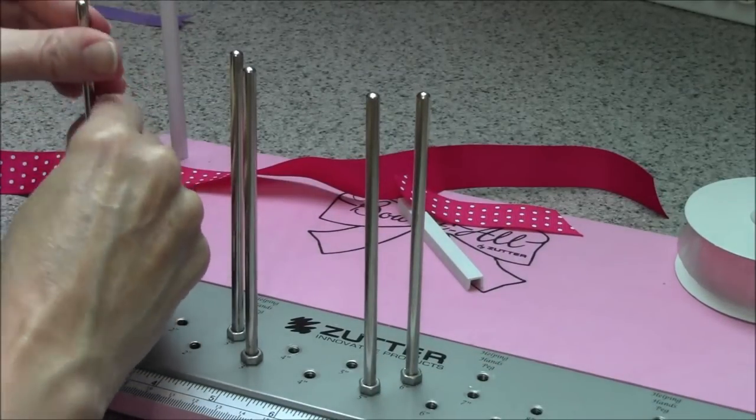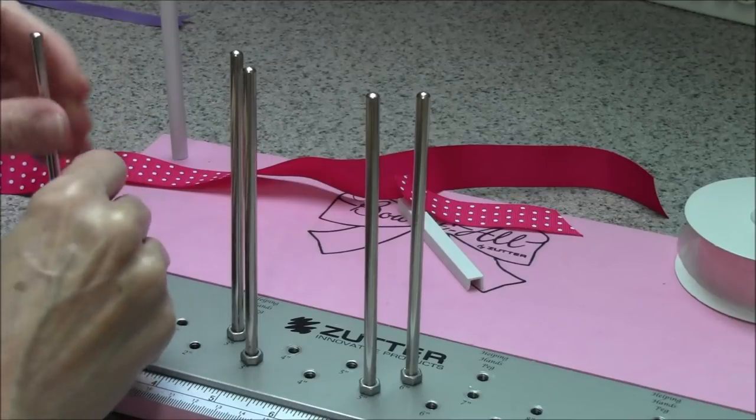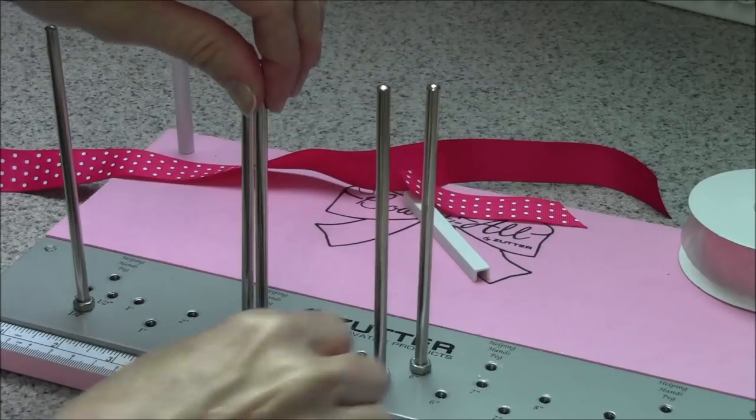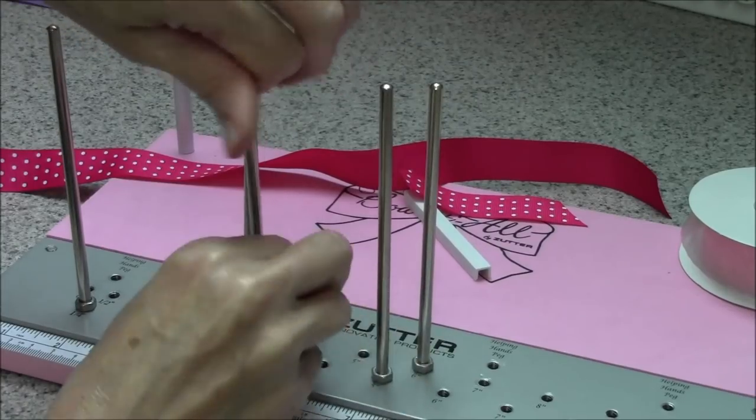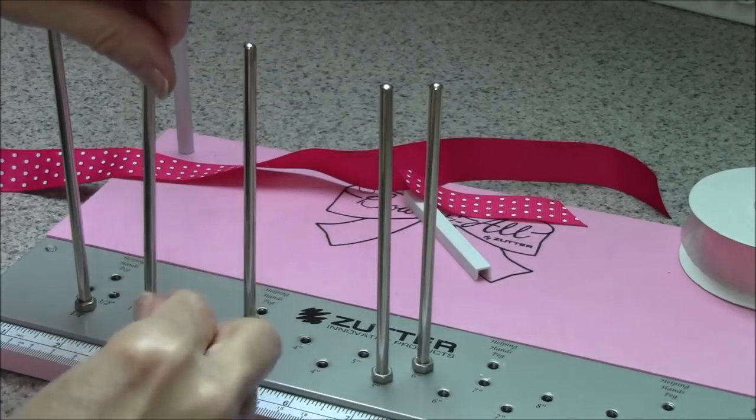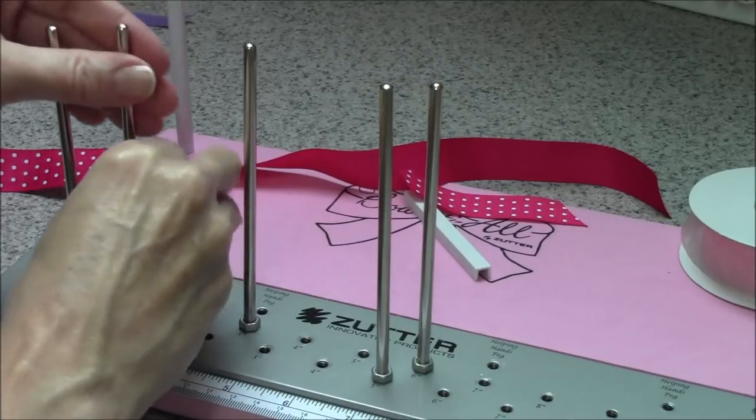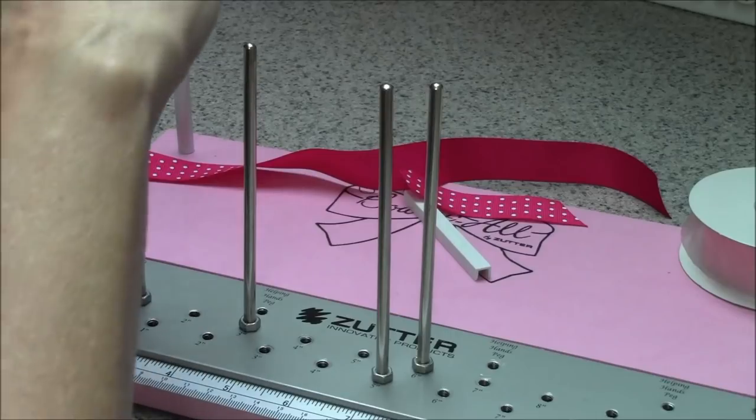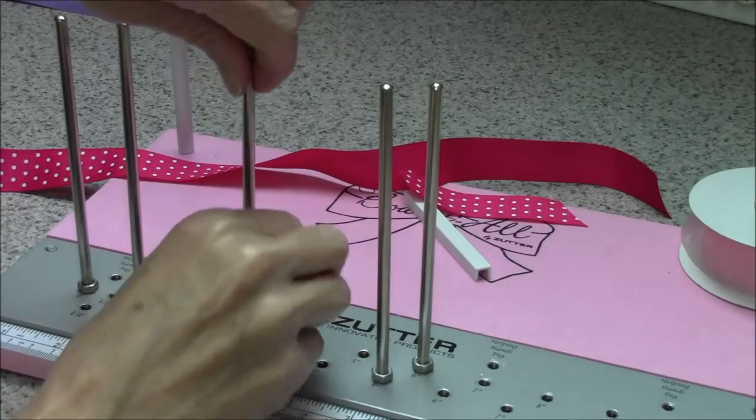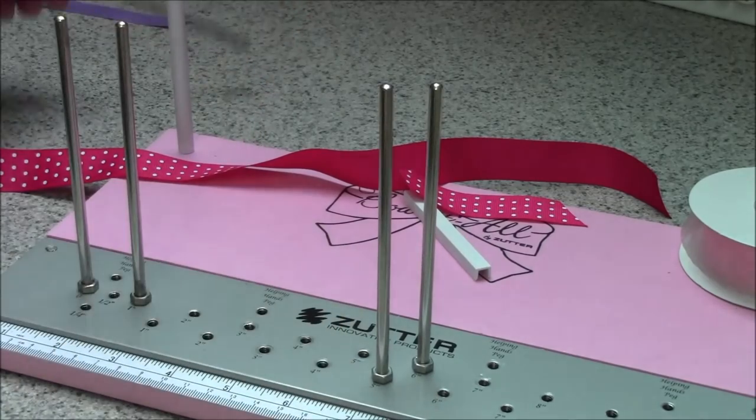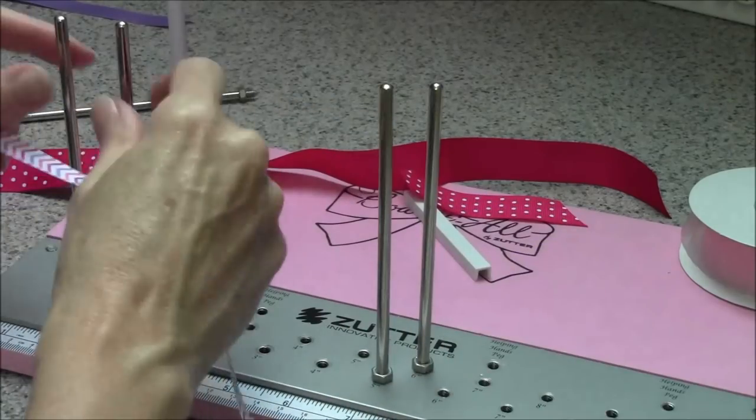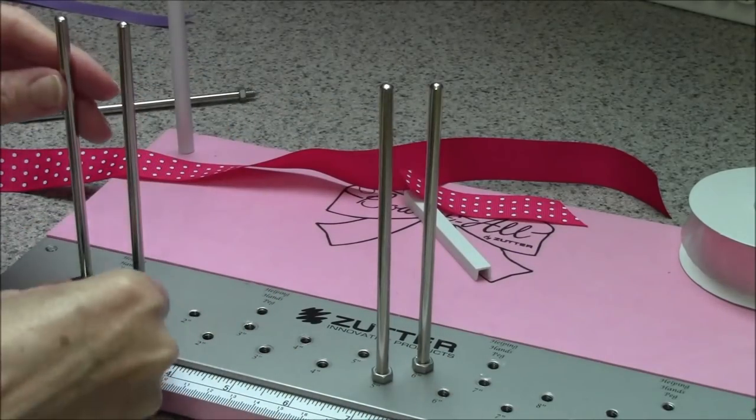And one more bow I want to show you. I really like how the 3/8 inch printed grosgrain makes them really - whoops, what am I doing? I need them in the 1 inch hole. Take this one out so it won't be in our way.